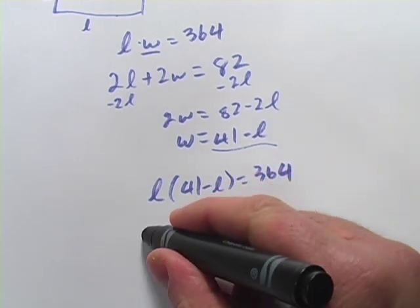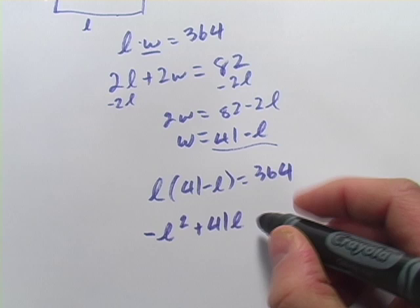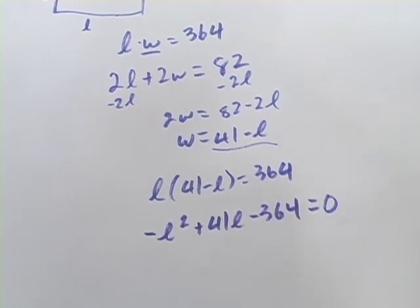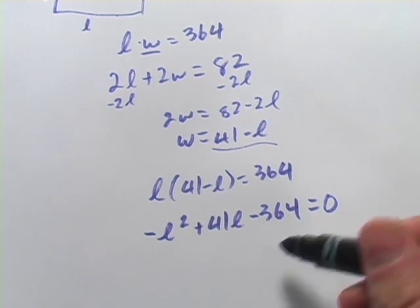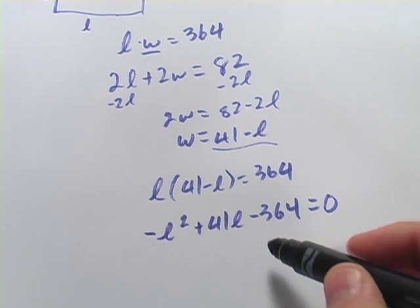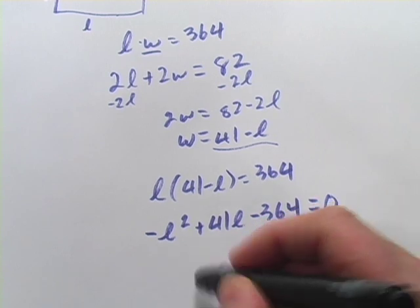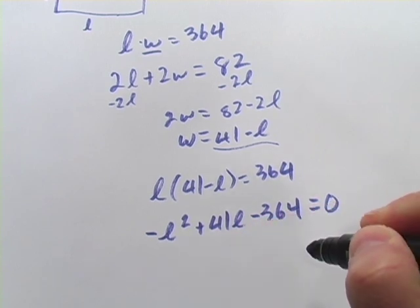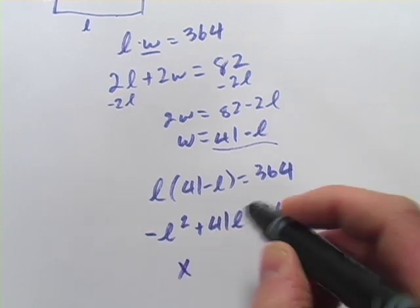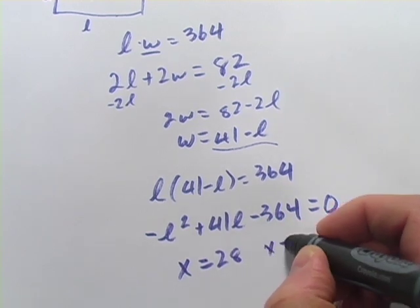We'll multiply through. We're going to get a negative L squared plus 41L. And then if I subtract the 364, we'd get minus 364 equals zero. And at this point, if it were me, I'd probably jump online and use a quadratic equation solver to find this one. And what you'll get is, although it does factor here, actually, you can get 28 and 13 out of this. But you'll find your answers are X equals 28 and X equals 13.